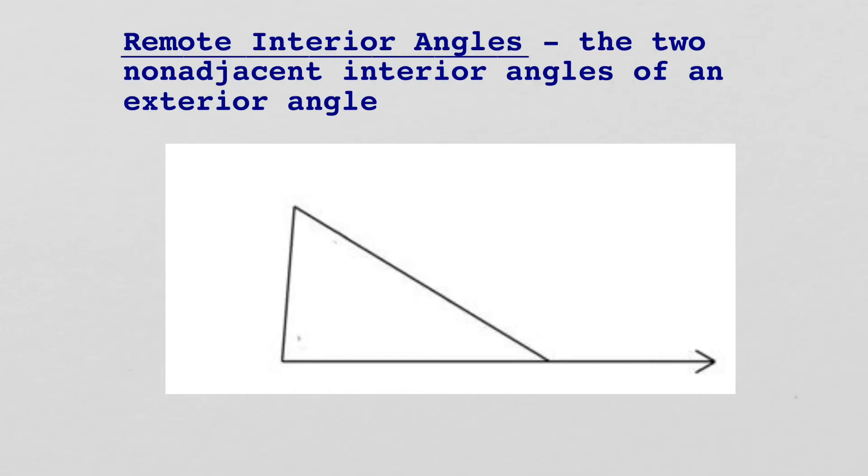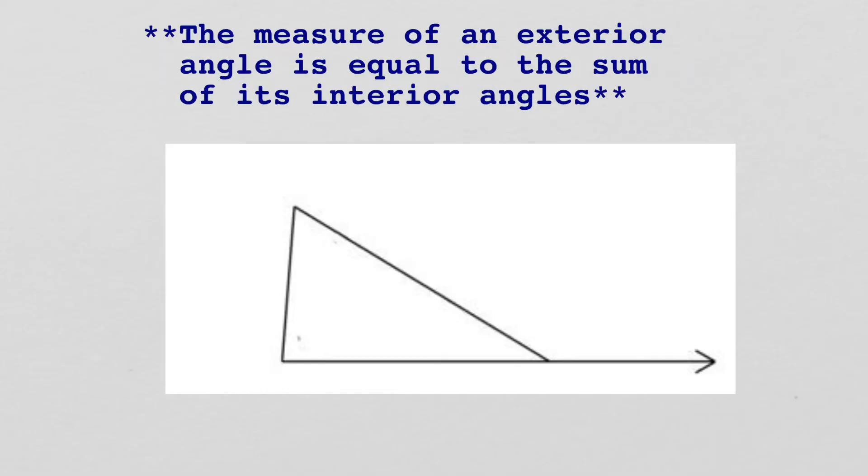Let's talk about a relationship that there is. Exterior angles have what's called remote interior angles. Now your textbook refers to them as remote interior. Other textbooks sometimes call them opposite interior. But basically what we're talking about is the two non-adjacent interior angles of an exterior angle. So if this is again our exterior angle, the two remote interior would be this angle here and this angle here. So they're the ones that are the non-adjacent interior angles. Now how is that helpful? That is helpful because there's a rule regarding remote interior angles. The rule is that the measure of an exterior angle is equal to the sum of its interior angles. And again, we can go ahead and prove that.